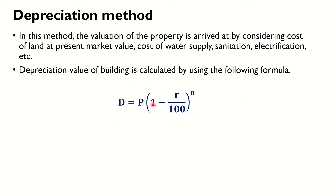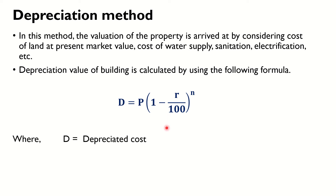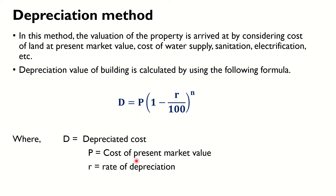This is similar to the compound interest formula, which is (1 + r/100)^n, but here it is (1 - r/100)^n because this is depreciation — the value will be decreasing. Here, D is the depreciation cost of the building, P is the cost of the building at present market value, r is the rate of depreciation, and n is the life of the building in years.